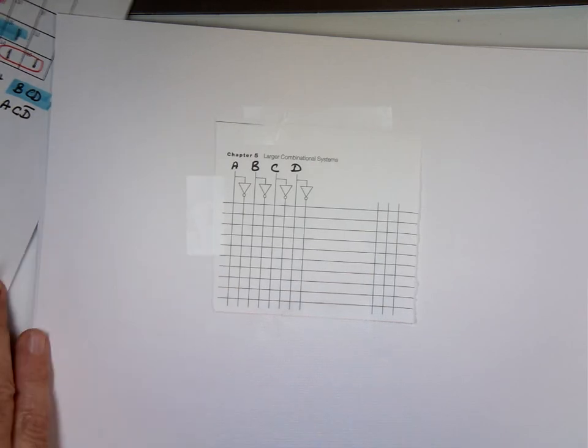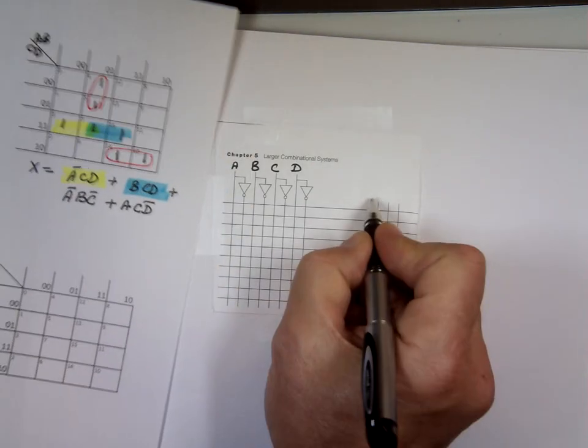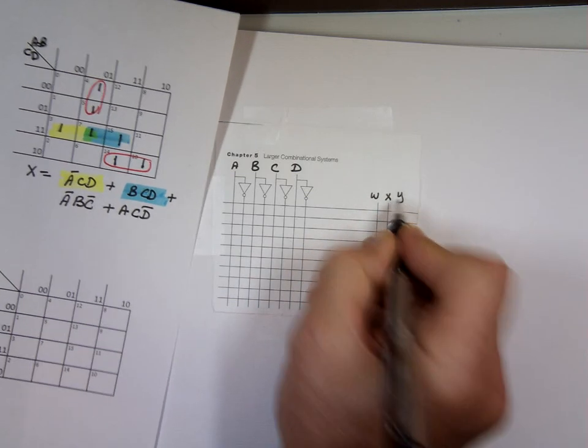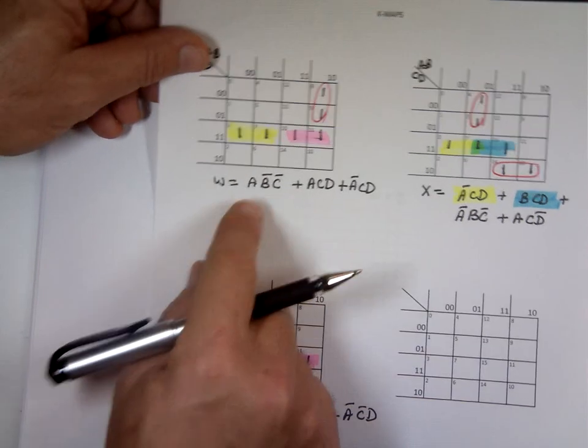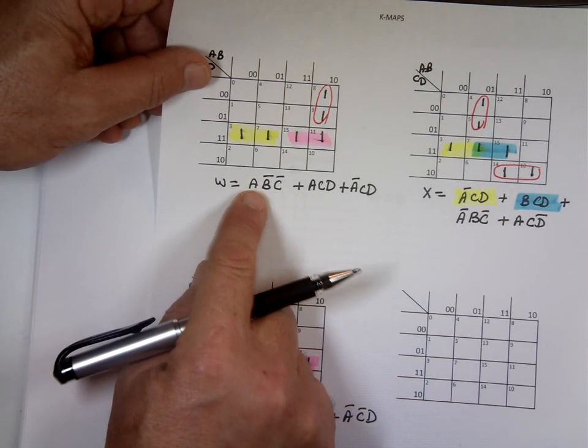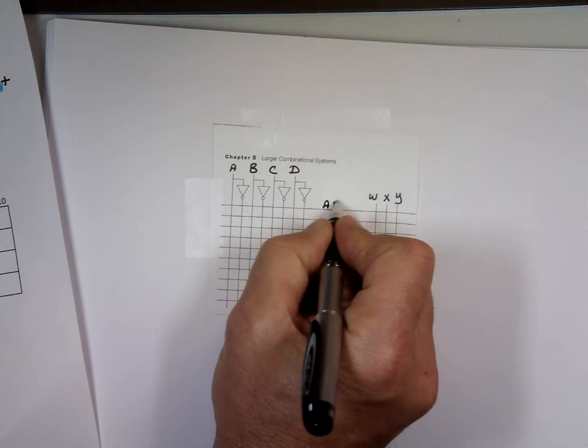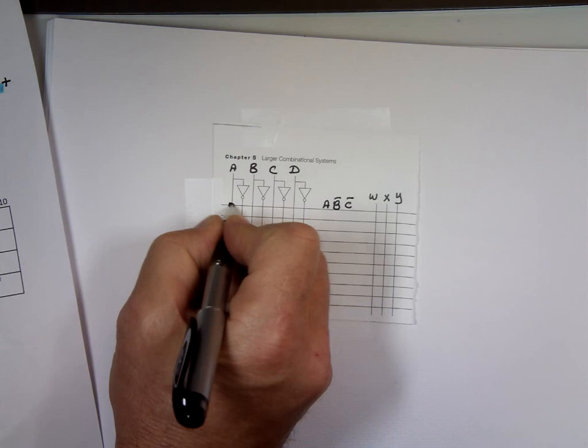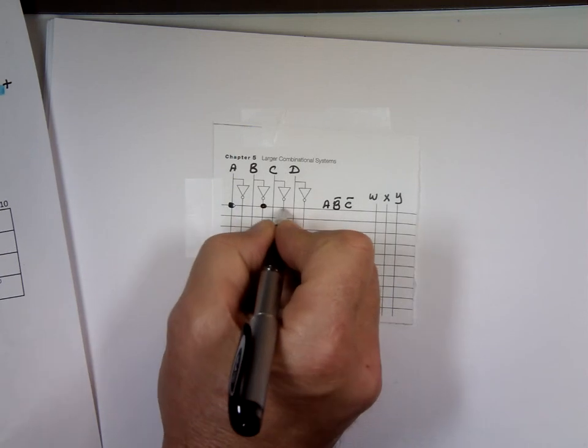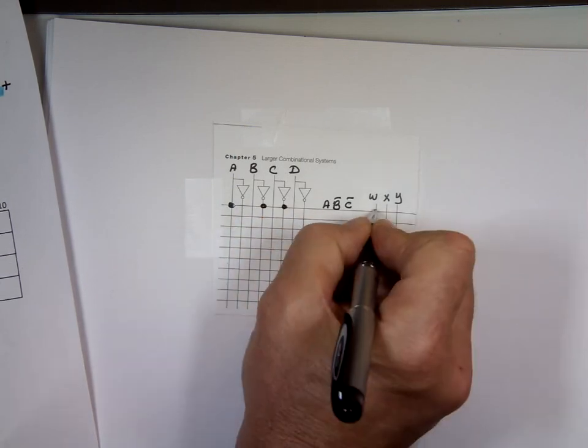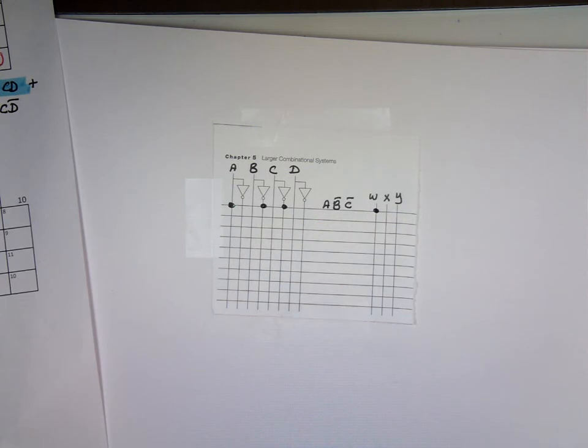So let's look at W first. There's going to be three outputs W, X, and Y. W is going to have a value of 1 when it's A, B bar, C bar. So that's this one. A, B bar, C bar. So A is right here, B bar, and C bar. W will be 1. That's an AND gate. So that takes care.